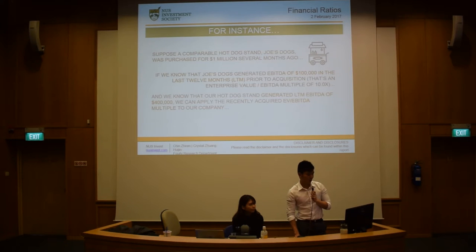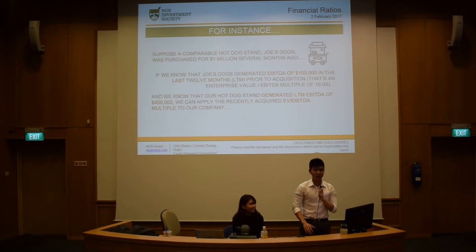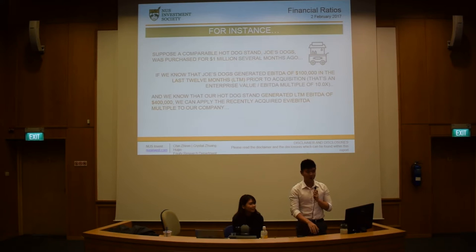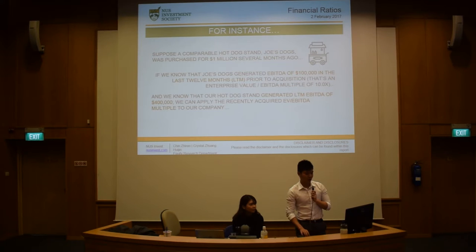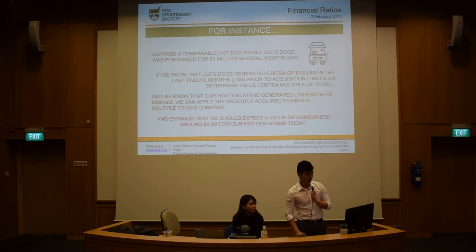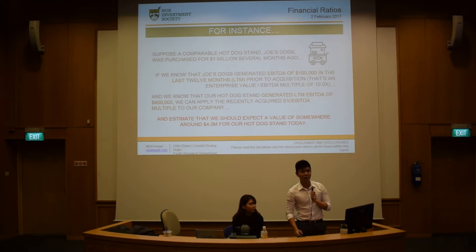For instance, here is a simple example. Let's say we have a comparable hot dog stand, which is Joe's Dock. It was purchased for $1 million several months ago. And if we know that Joe's Dock generated an EBITDA — earnings before interest, tax, and depreciation and amortization — of $100,000 in the last 12 months prior to acquisition, then that's an EV over EBITDA ratio of 10x, because it's $1 million over $100,000. So if our own hot dog stand generates an EBITDA of $400,000, using that EV/EBITDA ratio we can tell that our company is worth roughly $4 million.